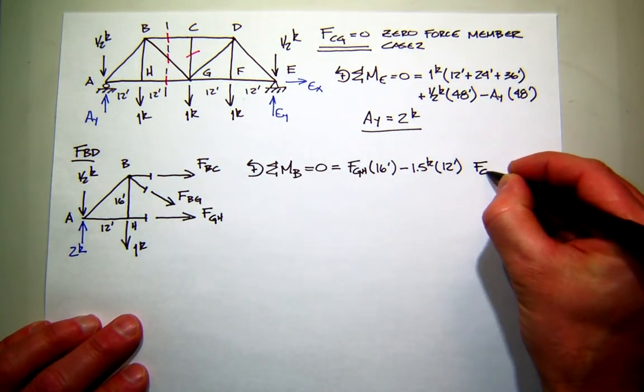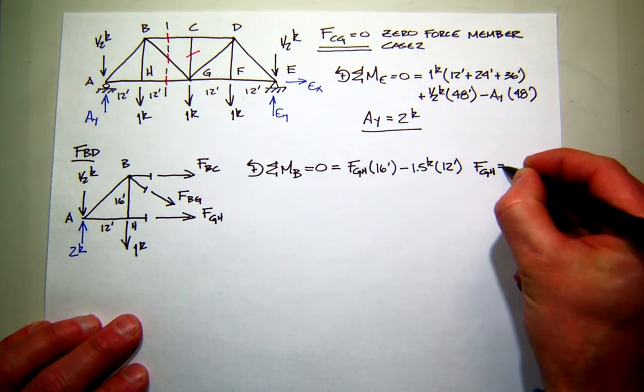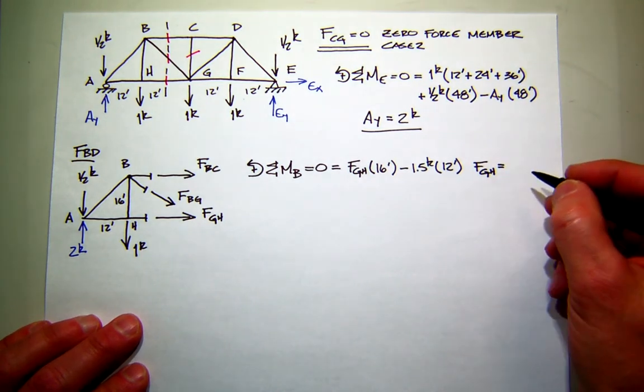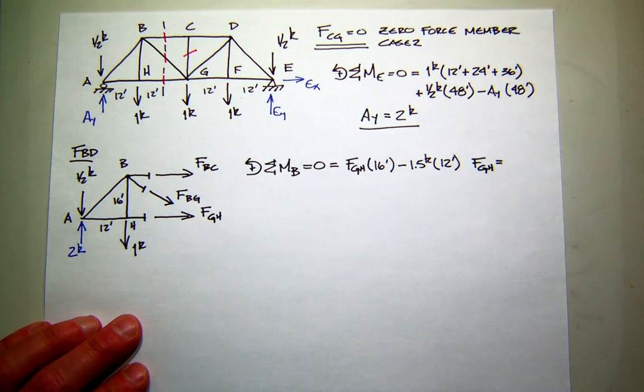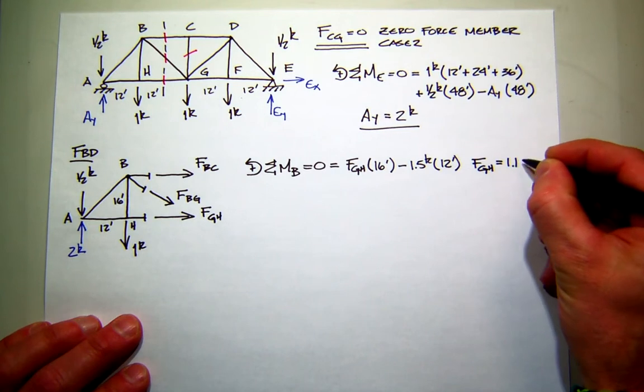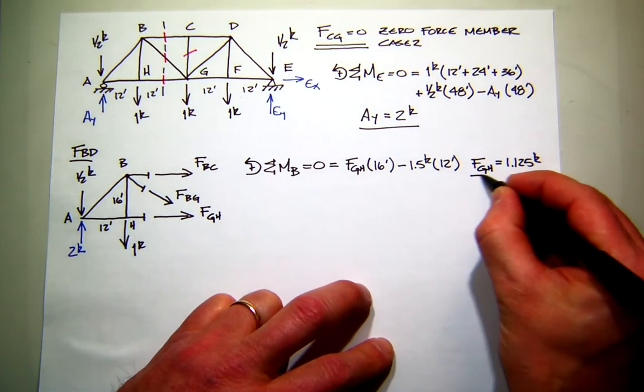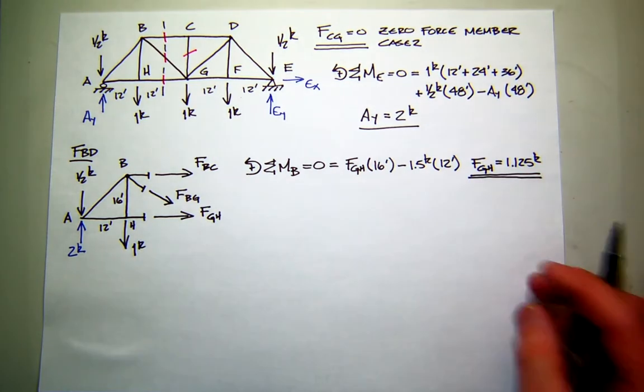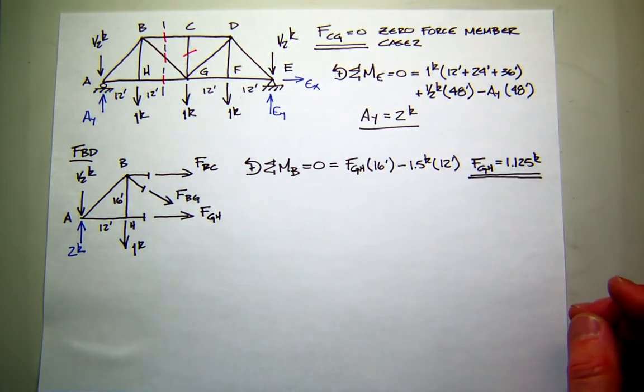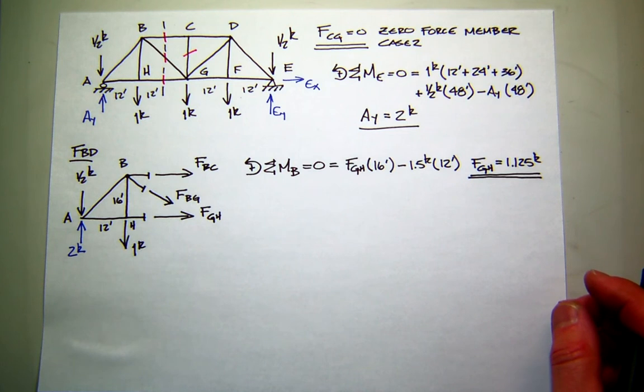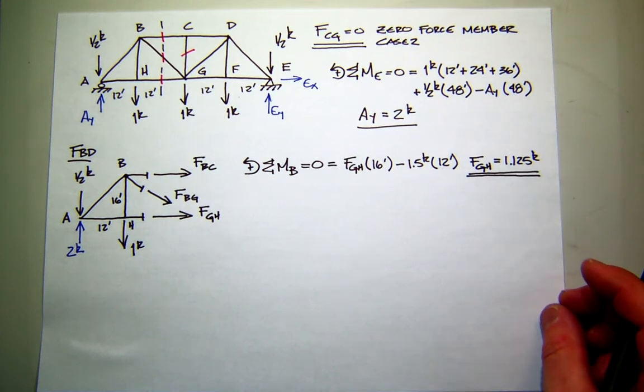So I have a 1.5 kip force, and a moment arm will be the horizontal distance, which is 12. So we should be able to find the force in GH. It looks like it's going to be positive, and I don't know what that number is going to be off the top of my head. 1.125. And that would be kips. And it came out positive. So Mr. Provence, is that compression or tension? Excellent. Let the court record that Mr. Provence said tension.